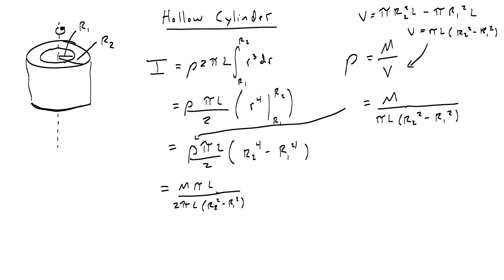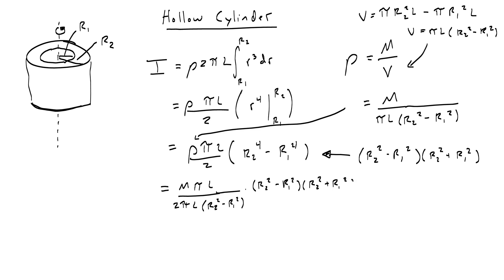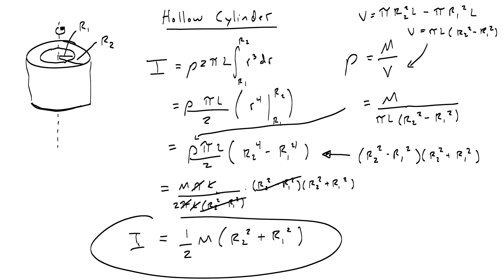We can factor r2 to the fourth minus r1 to the fourth using the difference of squares: it equals (r2 squared minus r1 squared) times (r2 squared plus r1 squared). The (r2 squared minus r1 squared) terms cancel, pi and l cancel, and what we're left with is one-half M times (r2 squared plus r1 squared). That is the moment of inertia for a hollow cylinder.